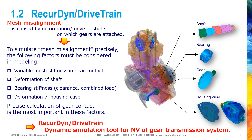Mesh misalignment is caused by deformation of shafts on which gears are attached, or slight movement of shafts. To simulate this situation precisely, the following four factors must be considered in the modeling: variable mesh stiffness by gear deformation and changing number of teeth under meshing; consideration of bending and torsional deformation of shaft; consideration of bearing stiffness under combined load; and consideration of housing case deformation under applied load. In particular, gear contact calculation with high accuracy is required because vibration is mainly excited by gear contact.